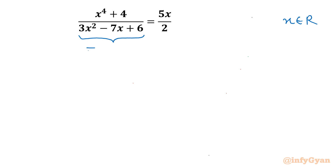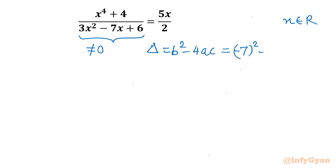The denominator cannot be 0. If we calculate the discriminant of this quadratic equation, it is b square minus 4ac. So b square is minus 7 square minus 4 times 3 times 6, which is 49 minus 72. This value is negative, so no real value of x will make our denominator 0. So there is no constraint at all.